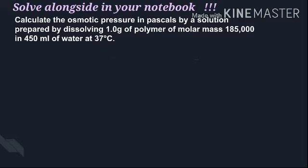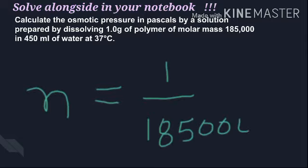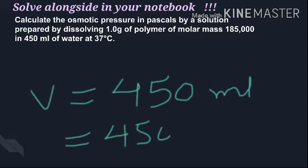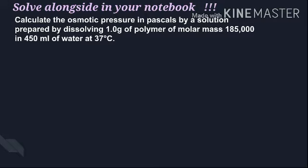Simple - we put all values and get the answer. The value of n (number of moles) is calculated as: 1 gram divided by 185,000 g/mol. Next is V, the volume. 450 ml in liters is 0.45 liters, so divide by 1000 to convert.